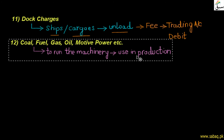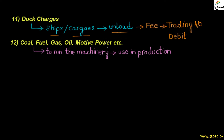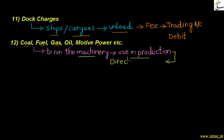The next expense is coal, fuel, gas, oil, and similar energy expenses. Why are we paying these expenses? We pay them to run our machines which are used in our production. Since these expenses are related to production — they are direct expenses — just as we have seen before, production-related expenses are written on the trading account debit side. So these machine fuel expenses also come to the debit side.